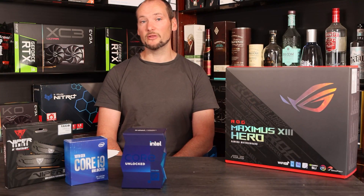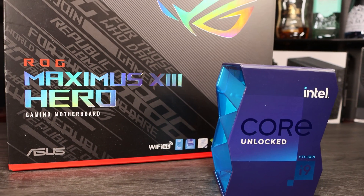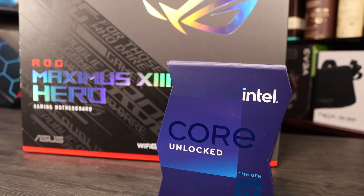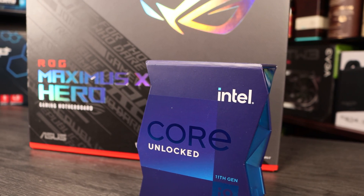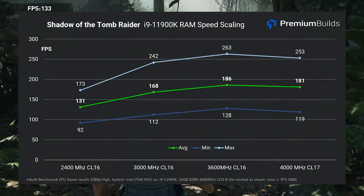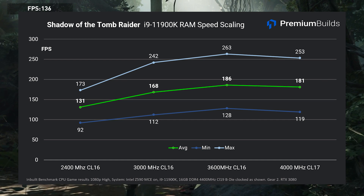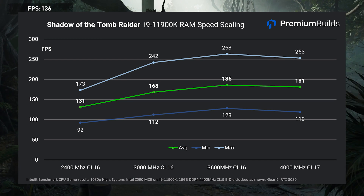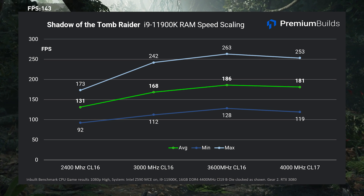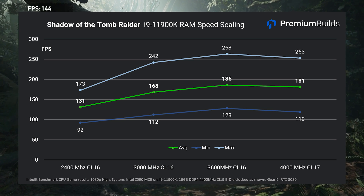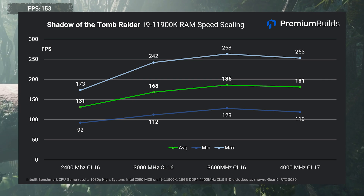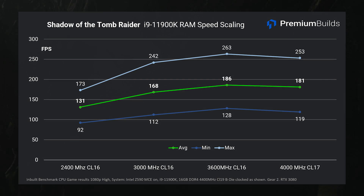Moving on to Intel's latest CPU, the i9-11900K, and using the same benchmarks, we can see the same trend with a couple of caveats. Note these tests were performed in Gear 2 mode because Gear 1 isn't stable at the higher memory speeds, and that's also why 4400MHz is missing from these results - it wasn't possible to stabilise it in the gaming benchmarks at that speed. Here again we see a serious boost in performance moving from 2400MHz up to 3000MHz and then to 3600MHz, adding 55 frames per second average to the CPU's performance from those base settings. That's a 41% boost moving from 2400MHz to 3600MHz CL16. At 4000MHz CL17, performance tails off marginally - we're approaching the limits of the memory controller and the slacker secondary and tertiary timings dent performance overall.